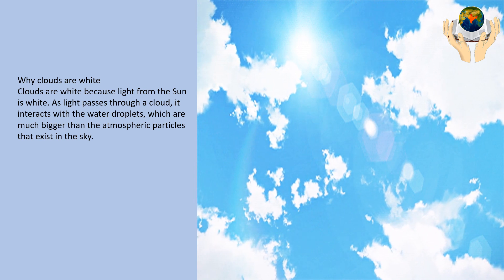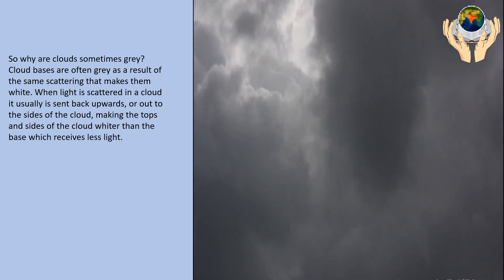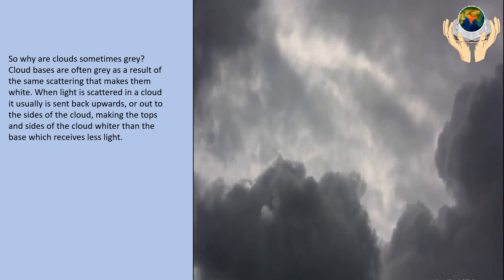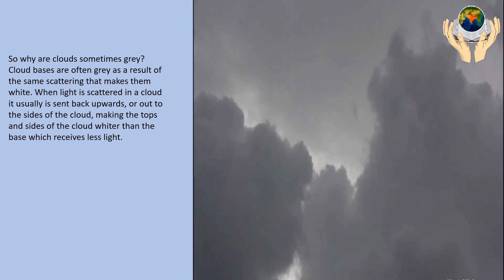So why are the clouds sometimes gray? Cloud bases are often gray as a result of the same scattering that makes them white. When light is scattered in a cloud, it's usually sent back upwards or out to the sides of the cloud, making the top and sides of the cloud whiter than the base, which receives less light.